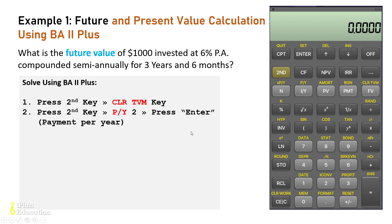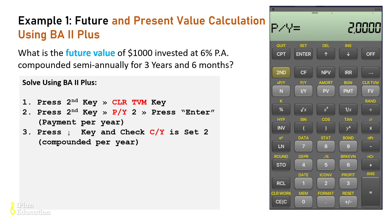Now input the values. First, enter the payments per year — that is twice a year, so press the second key and press the I/Y button to access P/Y. Enter two. By default, whatever P/Y is set to, the same C/Y will be taken automatically by the financial calculator. Then press second key and quit to exit the P/Y setting.